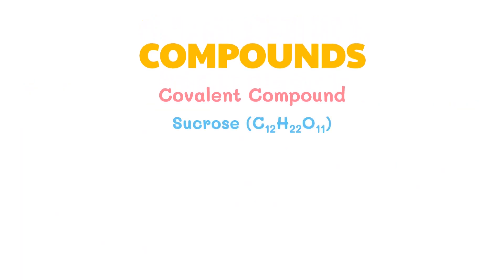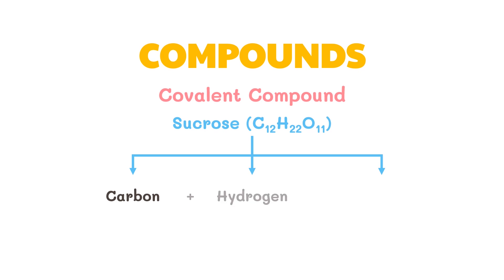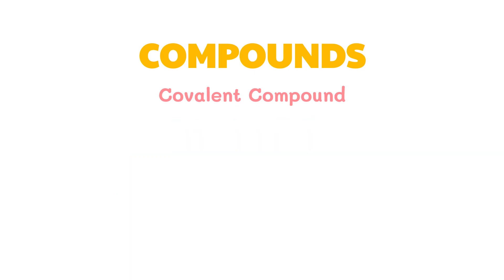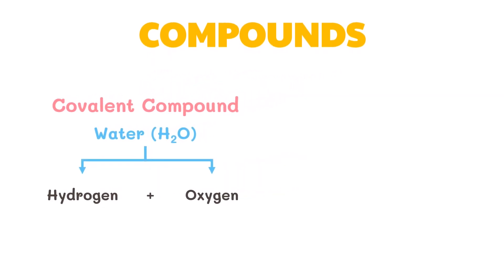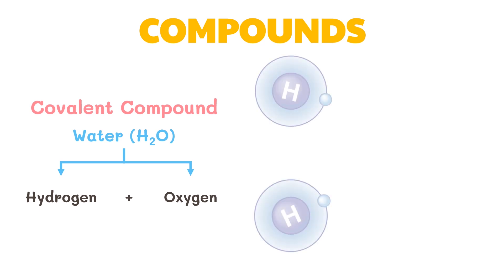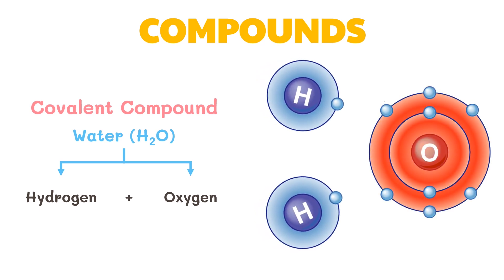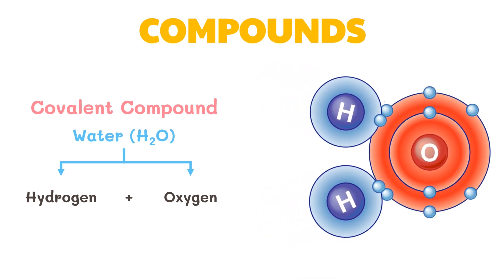Table sugar, or sucrose, is an example of a covalent molecular compound — it is a combination of carbon, hydrogen, and oxygen atoms. Another example of a covalent compound is water, which is the combination of hydrogen and oxygen. Hydrogen and oxygen atoms share electrons to form the water molecule, and this sharing of electrons results in a covalent bond between atoms.